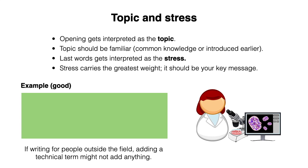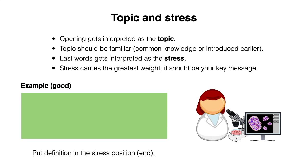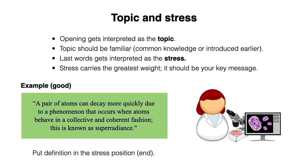Now, if you're writing for people outside the field, adding a technical term might not add anything. So we can just leave it out and instead write: "A pair of atoms can decay more quickly due to a phenomenon that occurs when atoms behave in a collective and coherent fashion." Even if you're writing for an audience outside the field, maybe you want to define superradiance. You can do this by putting the definition in the stress position at the end: "A pair of atoms can decay more quickly due to a phenomenon that occurs when atoms behave in a collective and coherent fashion. This is known as superradiance."